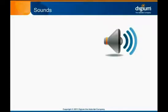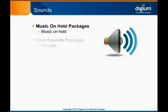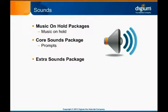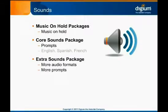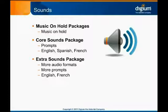The typical Asterisk installation includes a set of default sound files that can be used for hold music and prompts. There are also extended sound packages that supplement the base library and provide your Asterisk system with a wider variety of audio formats and additional prompts. Core sounds are available in English, Spanish, and French. Extra sounds are available in English and French. These sound packages can be installed using the Menu Select tool or manually.